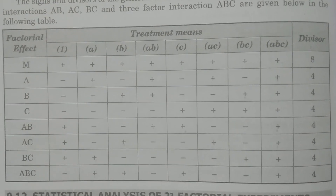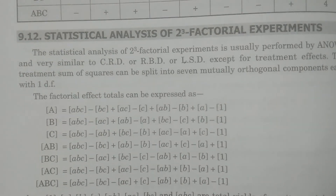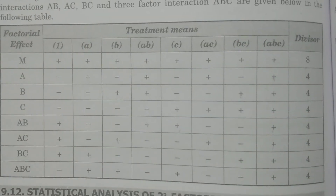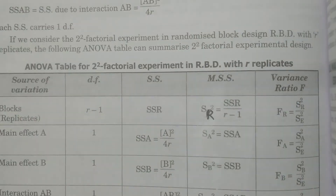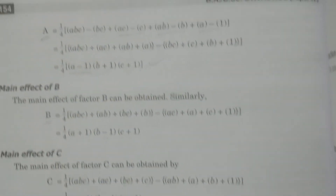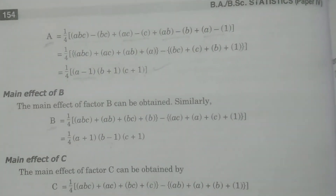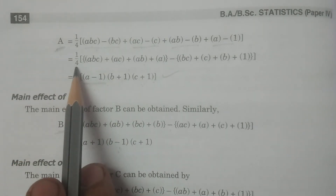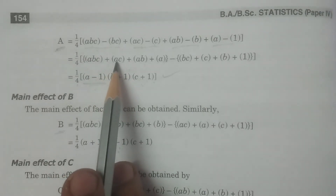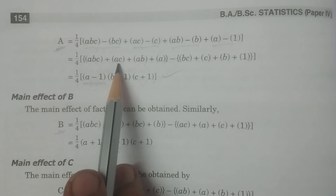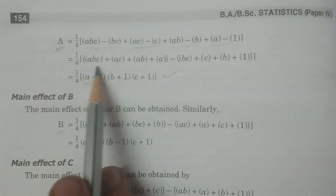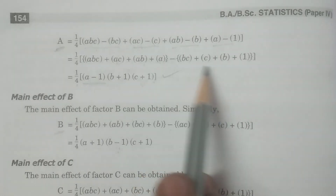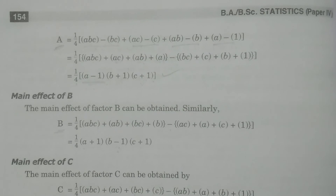For example, one particular value — for main effect A, these are totals, the formulas of totals, divided by 4. The formula for main effect A is: 1/4 × (ABC + AC + AB + A) — these 4 are having positive signs. The remaining — which are not having A, that is BC, C, B, and 1 — are having negative signs. Like that, the signs are going to be explained.